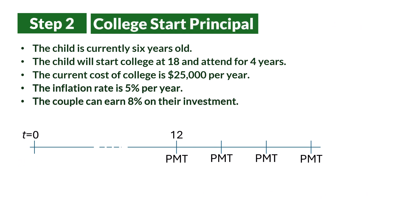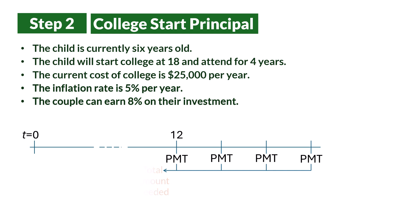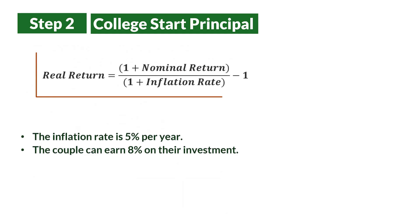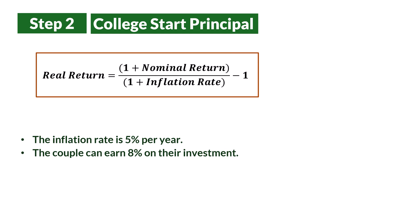For step 2, we calculate the total amount needed at the beginning of college, 12 years from now, to fund the child's education for 4 years. This step requires the real rate of return — that is, the inflation-adjusted rate of return — determined by the Fisher equation: real rate of return equals (1 plus nominal rate of return) divided by (1 plus inflation rate), minus 1.